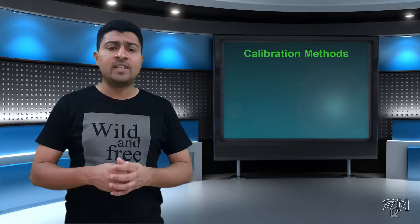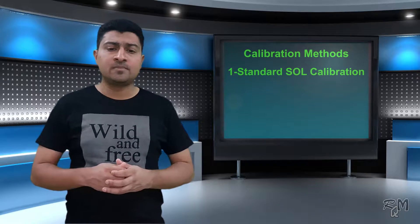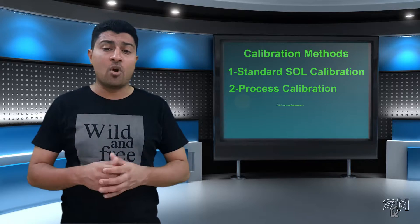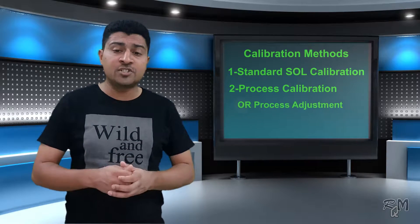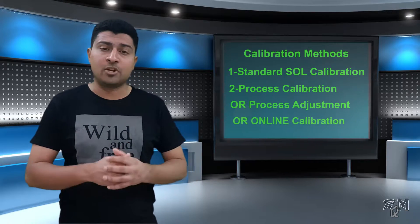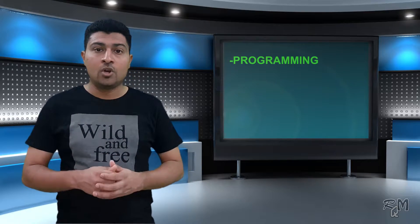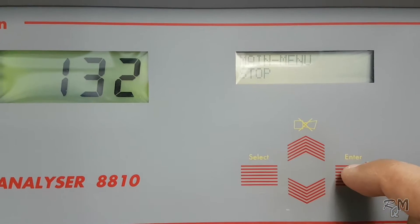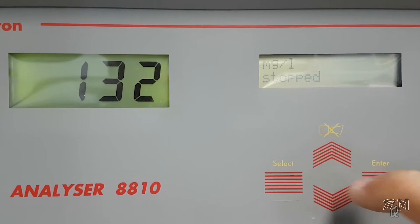Now we will discuss about calibration. As I told you, this analyzer utilizes the same methods of calibration as any ordinary analyzer — standard solution calibration and process calibration, or process adjustment, or online calibration. First we will see calibration options under the programming menu. To go inside the programming menu, the analyzer should be in stop condition.